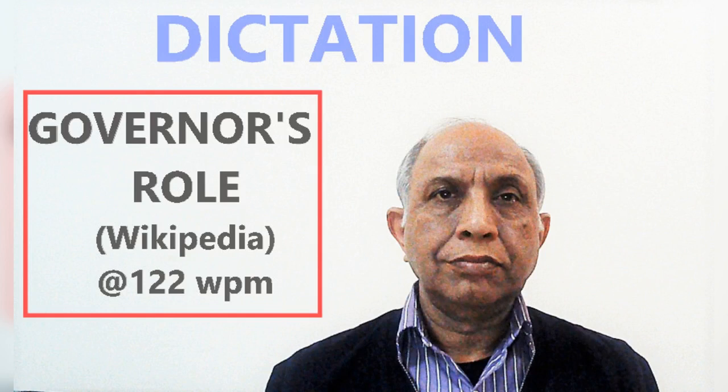The constitution vests in the governor all the executive powers of the state government. The governor appoints the chief minister who enjoys the support of the majority in the state legislative assembly. The governor also appoints the other members of the council of ministers and distributes portfolios to them on the advice of the chief minister.